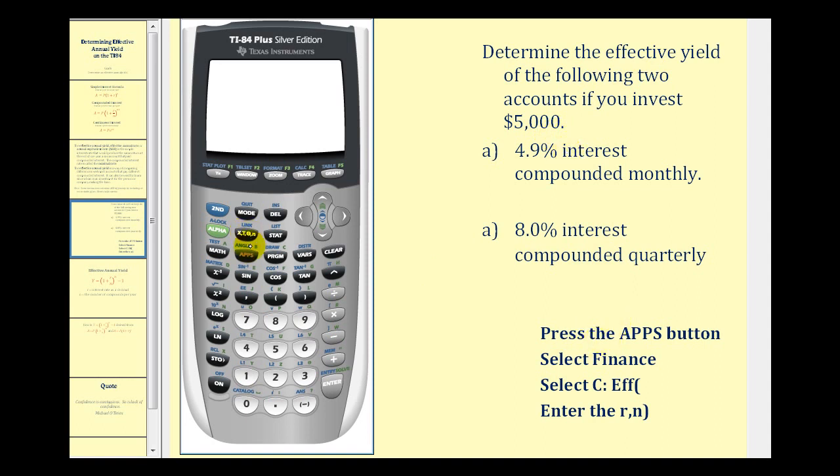So we're going to press the apps key. Select the finance menu, which is the first one, press enter. And now we need to find EFF located under C. So I'm going to press the up arrow, and then notice here's the command that we want, EFF. Press enter.